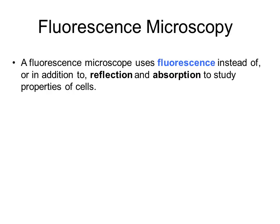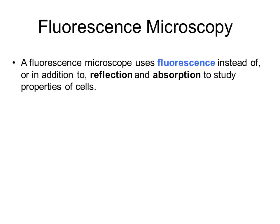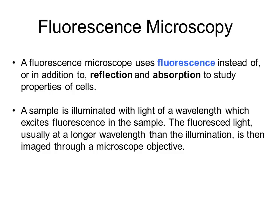A special kind of light microscope is the fluorescence microscope. The fluorescent microscope uses fluorescence, instead of or in addition to reflection and absorption, to study properties of cells. A sample is illuminated with a light wave which excites the fluorescent molecules in that sample. The fluorescent light emitted is usually of a longer wavelength than the illumination, and is then imaged through the microscope objective. We're going to look at two fluorescent molecules and how they fluoresce at different wavelengths to distinguish different molecules and organelles within the cell.